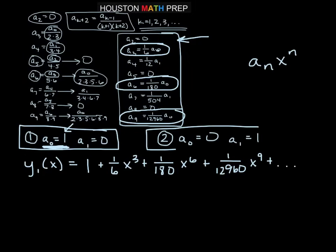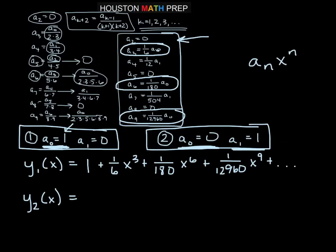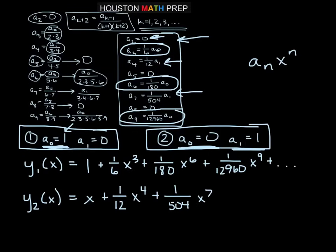For y sub 2 of x, with a sub 0 equals 0 and a sub 1 equals 1: no constant term; a sub 1 gives x; a sub 2 is 0; a sub 3 is not based on a sub 1; a sub 4 gives plus one-twelfth x to the 4th; a sub 7 gives plus 1 over 504 times x to the 7.